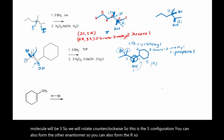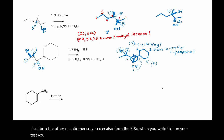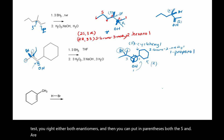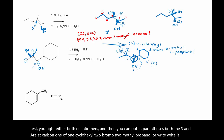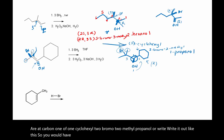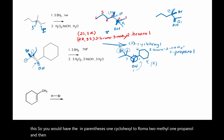So when you write this on your test, you write either both enantiomers — and then you can put in parentheses both the S and R at carbon one of 1-cyclohexyl-2-bromo-2-methyl-1-propanol — or write it out like this: (S)-1-cyclohexyl-2-bromo-2-methyl-1-propanol and also (R)-1-cyclohexyl-2-bromo-2-methyl-1-propanol. There are a couple of different ways to go about this.